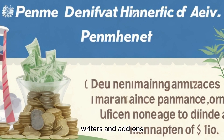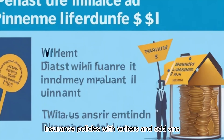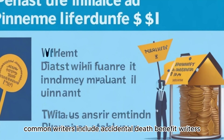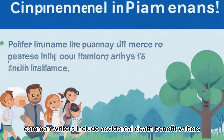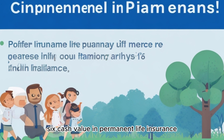Riders and add-ons. Policyholders can customize their life insurance policies with riders and add-ons. Common riders include accidental death benefit riders, disability income riders, and long-term care riders.